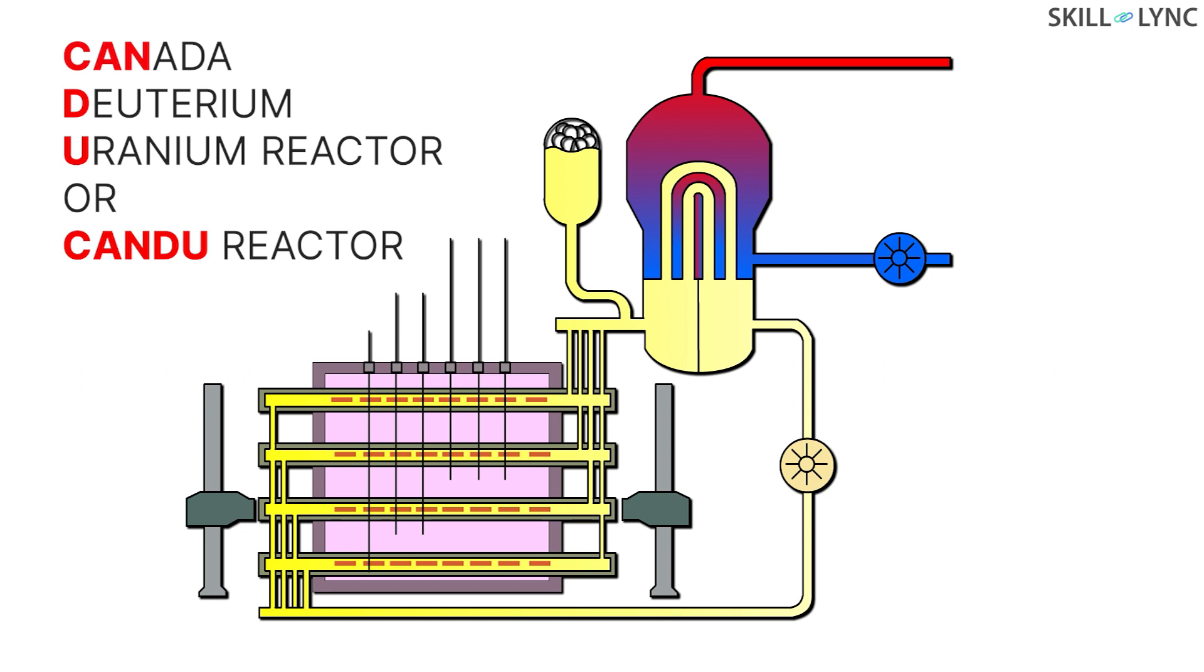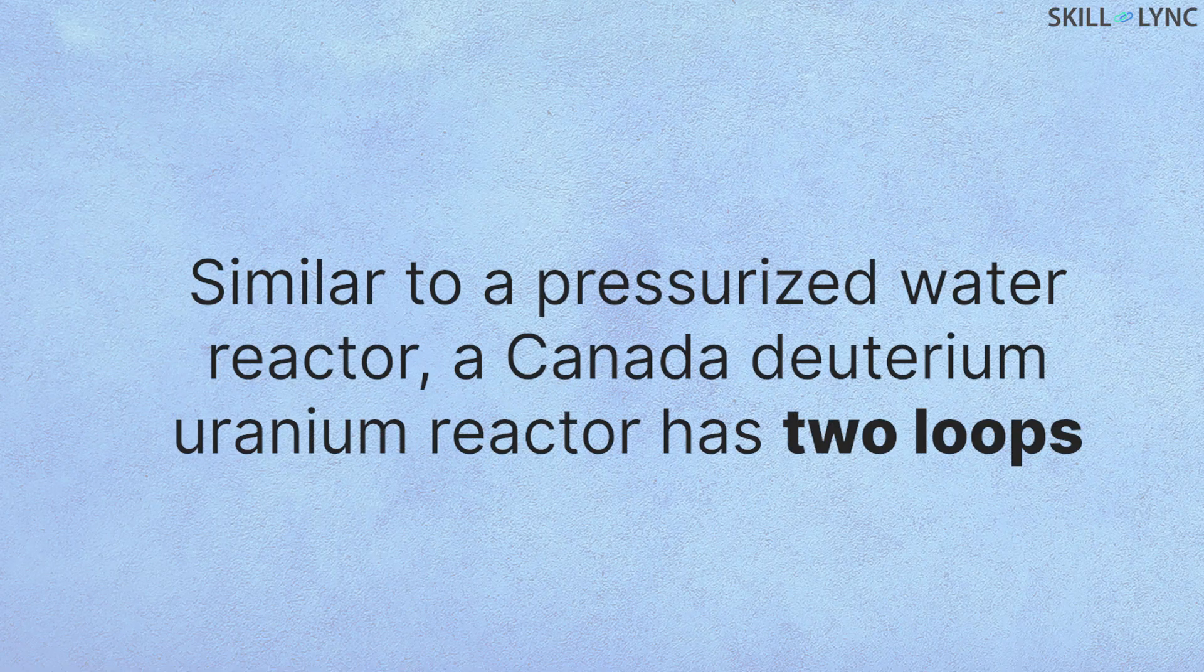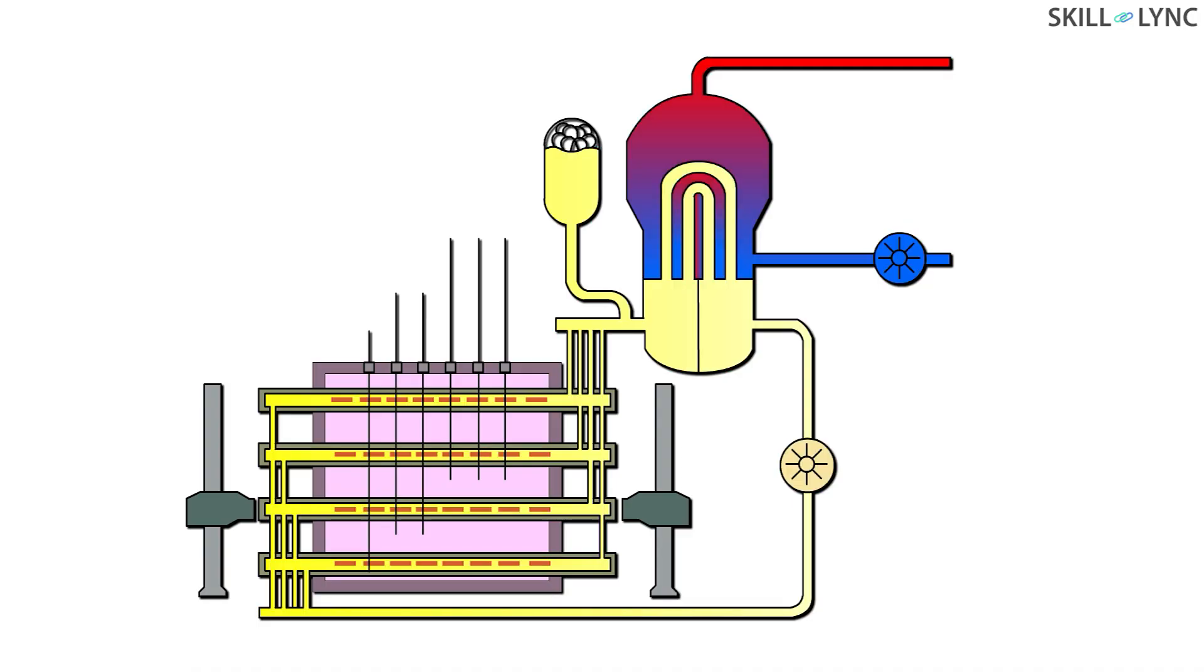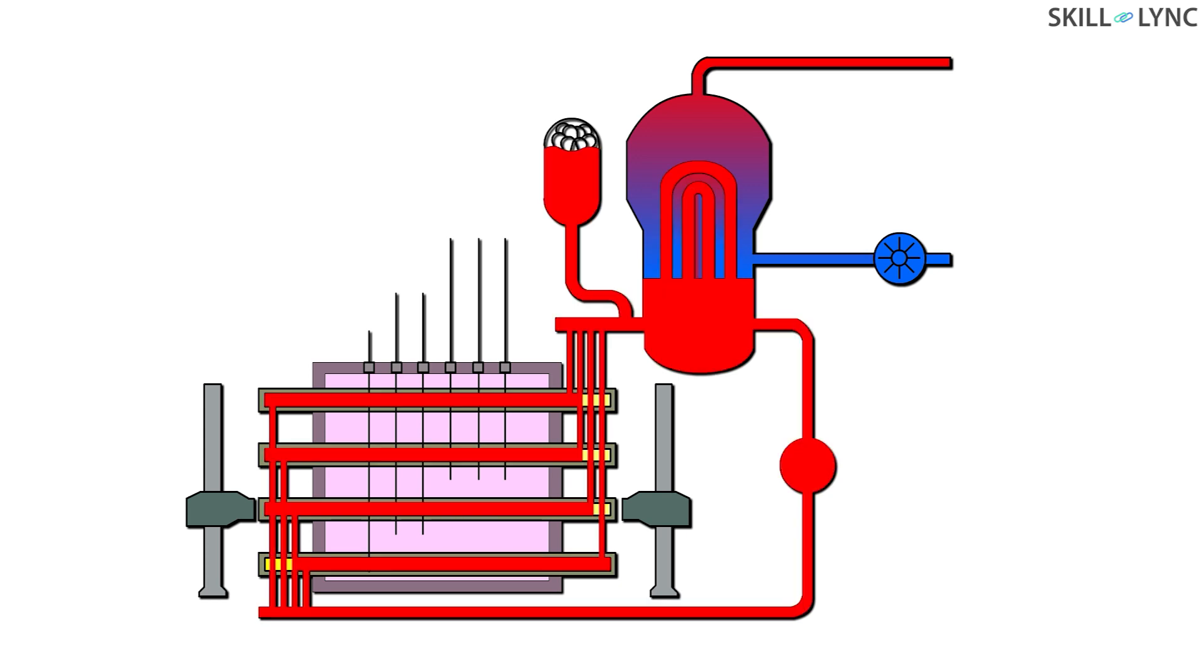The operation of a CANDU reactor is similar to other types of nuclear reactors. Similar to a pressurized water reactor, a Canada Deuterium Uranium reactor has two loops: primary and a secondary loop.